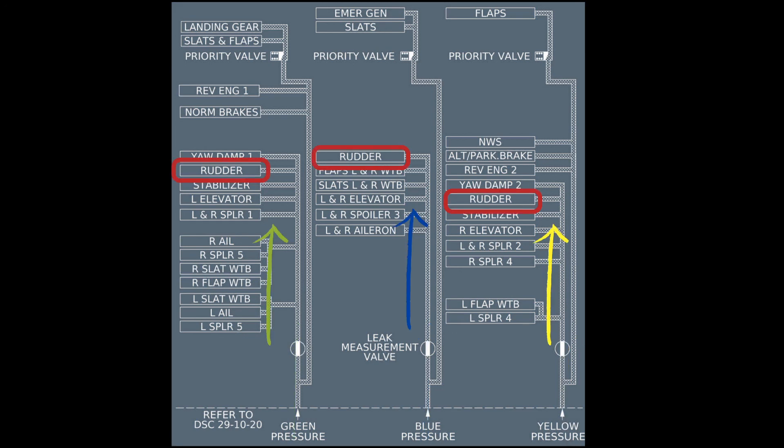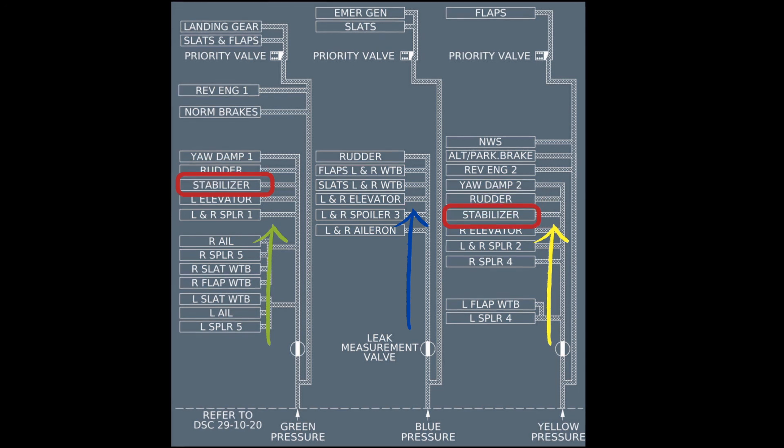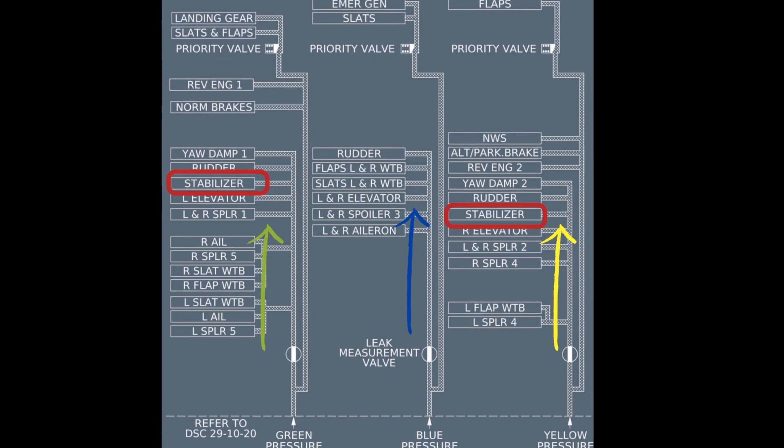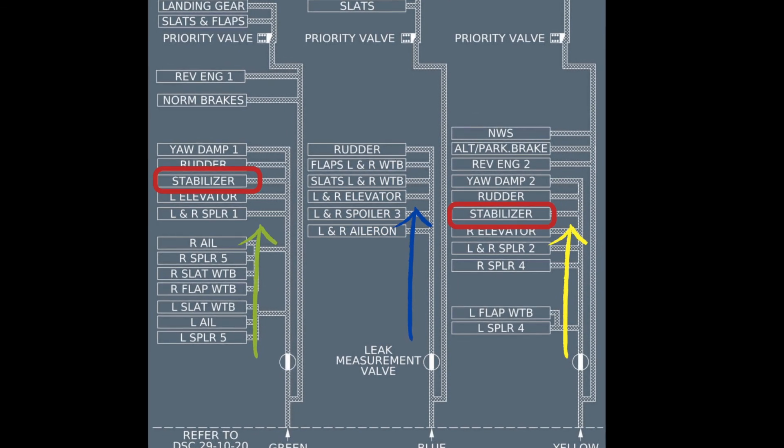Failure of any two systems will still allow the rudder to function. The stabilizer is supplied by the green and yellow systems. Failure of any of green or yellow system will still allow the stabilizer to function.